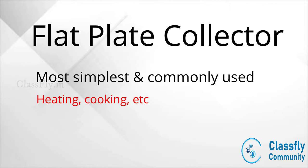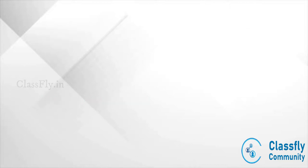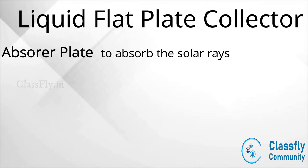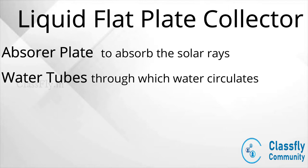Let us study the working of a liquid flat plate collector, which is usually used for heating cold water. It consists of an absorber plate which is used to absorb the solar rays that fall on it. Then it has water tubes that are used to circulate water, attached to the absorber plate and made of metal.